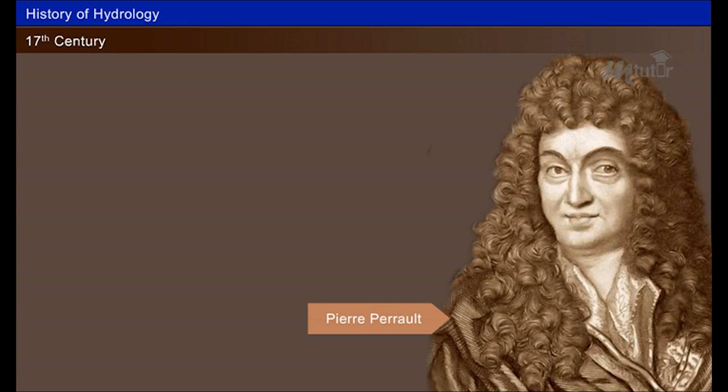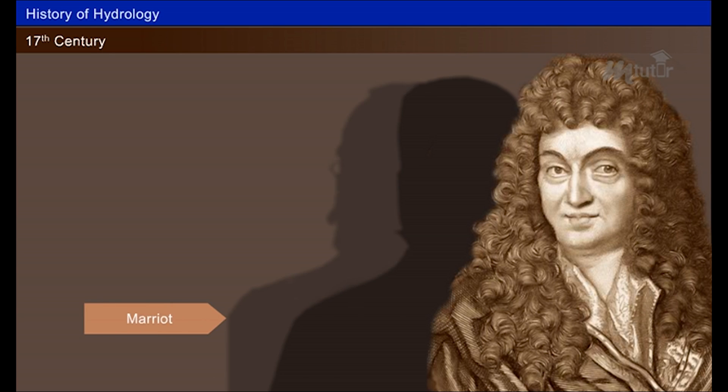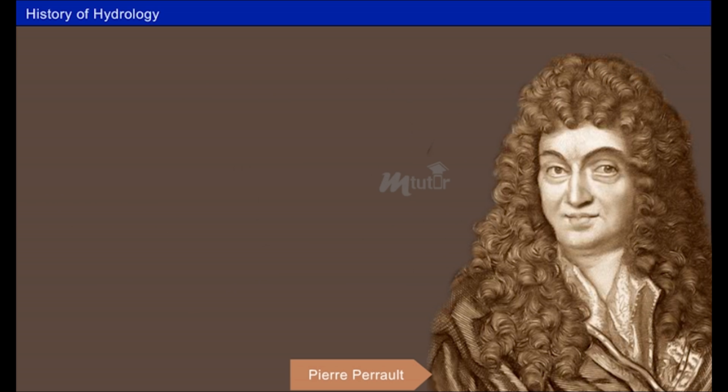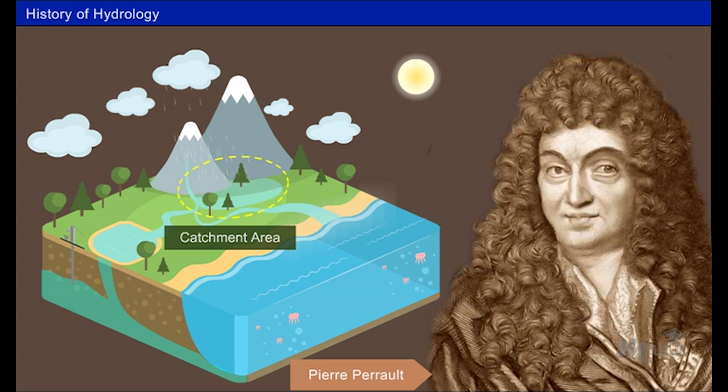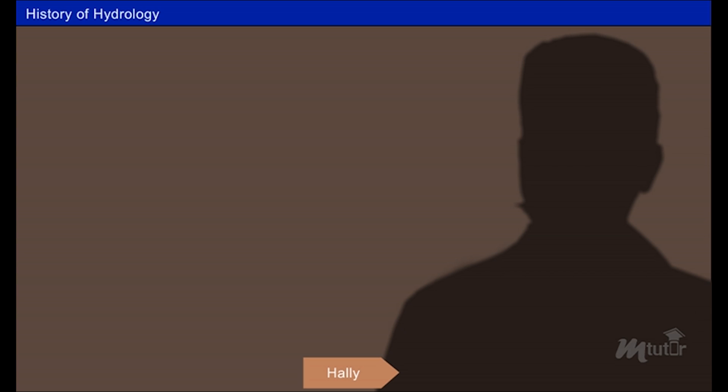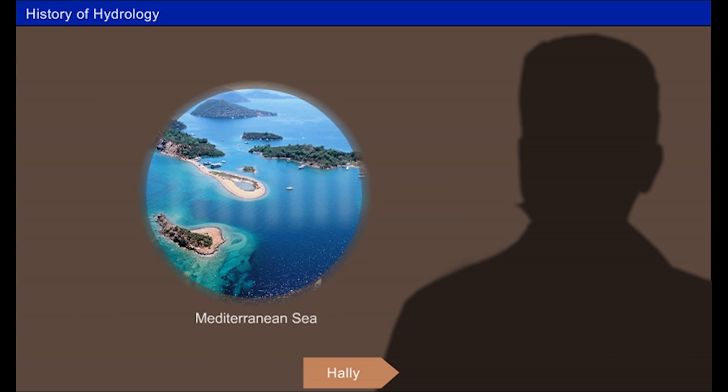In the 17th century, Pierre Peralt, Marriott and Halley were the pioneers of modern hydrology. Pierre Peralt was first one to propose the concept of rainfall measurement by water balance equation and catchment area method. Halley was the first person to measure the evaporation in the Mediterranean Sea.